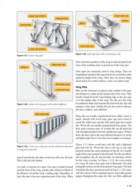Wing ribs are the structural cross pieces that combine with spars and stringers to make up the framework of the wing. They usually extend from the wing leading edge to the rear spar or to the trailing edge of the wing. The ribs give the wing its cambered shape and transmit the load from the skin and stringers to the spars. Similar ribs are also used in ailerons, elevators, rudders, and stabilizers. Wing ribs are usually manufactured from either wood or metal. Wood ribs are usually manufactured from spruce. The three most common types of wooden ribs are the plywood web, the lightened plywood web, and the truss type. Of these three, the truss type is the most efficient because it is strong and lightweight, but it is also the most complex to construct.